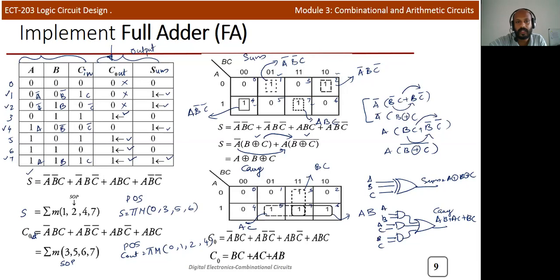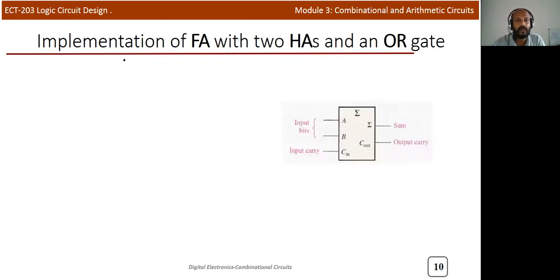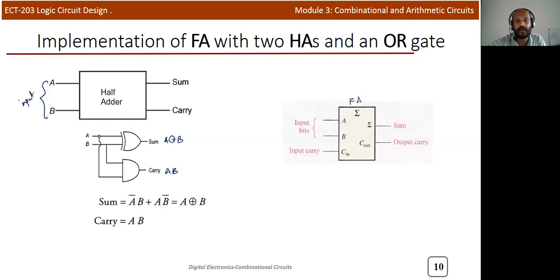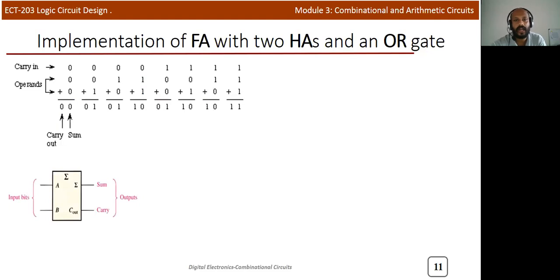Now we move to a very important topic — frequently asked in exams: how to implement a full adder using two half adders and an OR gate. A full adder has three inputs and two outputs. A half adder has only two inputs and two outputs (sum = A XOR B, carry = A·B). The idea is to add two bits at a time instead of three simultaneously.